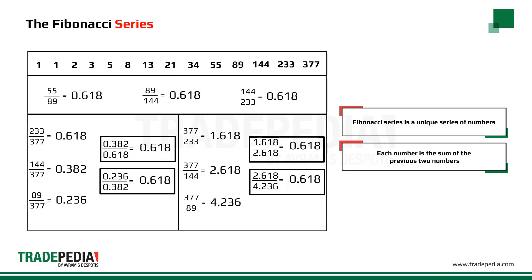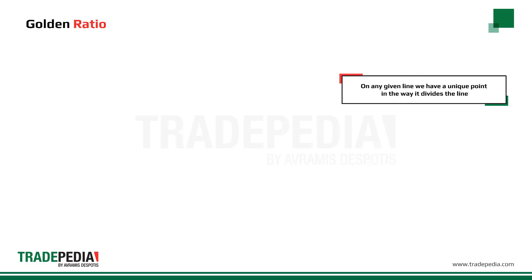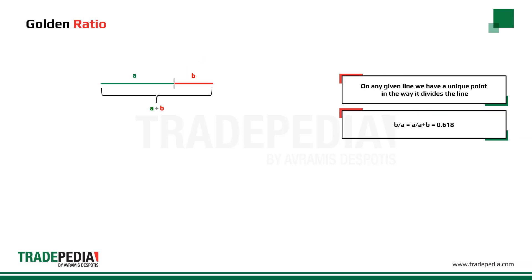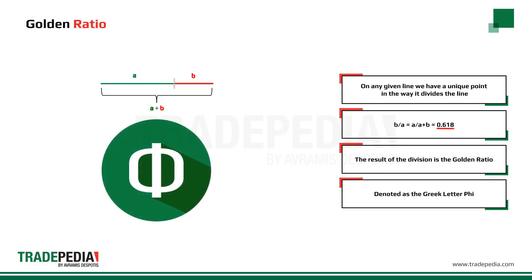So what is this magic number that keeps appearing throughout this series? This is a number that Pythagoras spoke about long before Fibonacci. Pythagoras stated that on any given line, there is a unique point — not in the middle, but a bit to the right — such that if you divide b by a, you get the same number as when you divide a by a plus b. That number is 0.618, the Golden Ratio, denoted as the Greek letter phi.